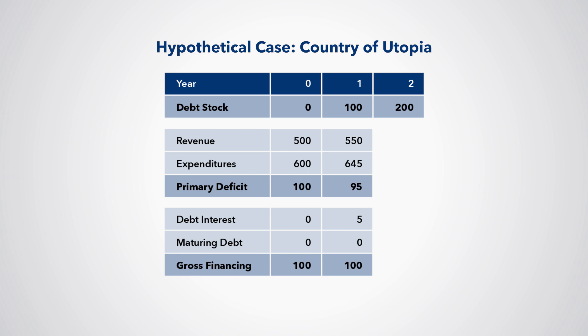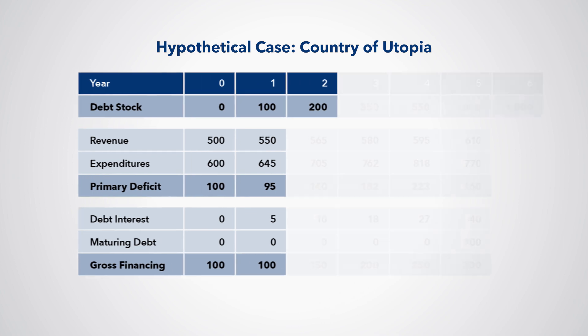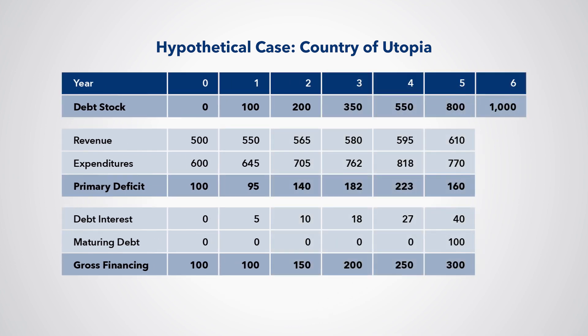We can follow this through each year, seeing how gross financing increases the debt stock. In year five, Ethiopia has the original debt that it borrowed in year zero to repay. As it has a primary deficit — that is, revenue is less than expenditure — it must borrow the 100 to repay the maturing bond. However, while gross financing in year five is 300, 100 of that is to repay all debt from year zero. So the debt stock increased by only 200. We therefore see that Ethiopia's debt flow from one year to the next is gross financing less maturing debt — that is, net new debt issued.